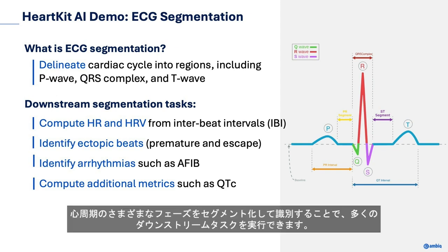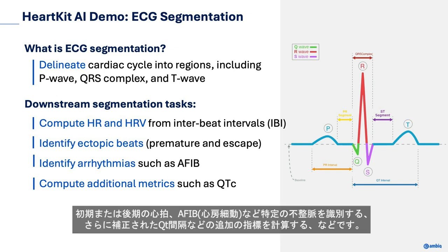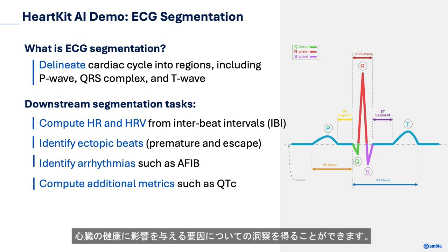By segmenting and identifying the various phases of the cardiac cycle, we can perform a number of downstream tasks, such as capturing heart rate and heart rate variability metrics from the inter-beat intervals, identifying ectopic beats — beats that are either premature or late — identifying certain heart rhythms such as AFib, along with computing additional metrics such as corrected QT interval. By monitoring the cardiac cycle, we can better understand the user's health, as well as draw insights into factors impacting heart health such as stress, physical activity, and sleep patterns.